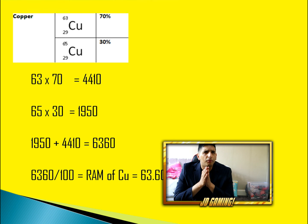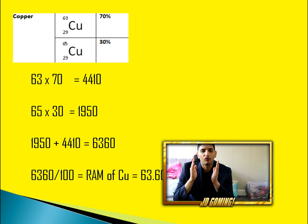Now for copper: do 63 times 70, which is 4,410. Then 65 times 30, which is 1,950. Adding 1,950 plus 4,410 gives 6,360. Divide by 100 and the relative atomic mass of copper is 63.60. It's so easy.